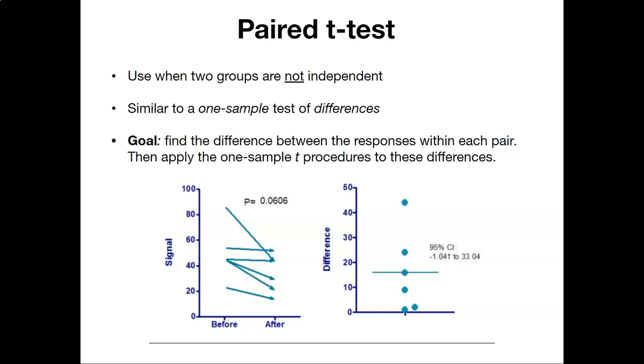That is to say, if you measure a child at age four for their height and then you measure them again at age five for their height, how tall they were at age four is going to influence how tall they are at age five. And so with the paired t-test, all that we're doing is something similar to a one-sample test of differences, but instead we're just taking into account that the two groups, the two sets of observations, are not independent.